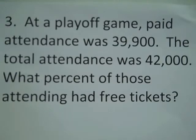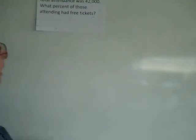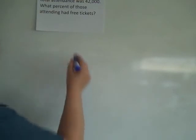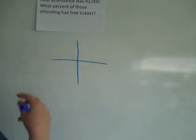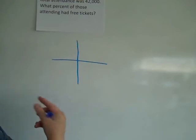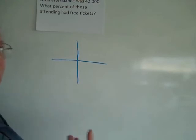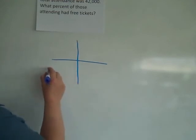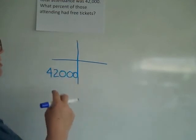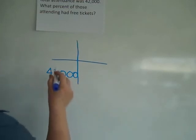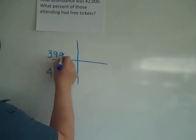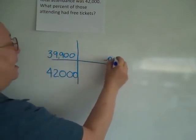At a playoff game, paid attendance was 39,900 and the total attendance was 42,000. What percent of those attending had free tickets? The grid is a good place to start. I look at both 39,900 and 42,000 and ask which one is all of it and which is part of it. The 42,000 becomes the total, because only part of them paid. The 39,900 is the part that paid.